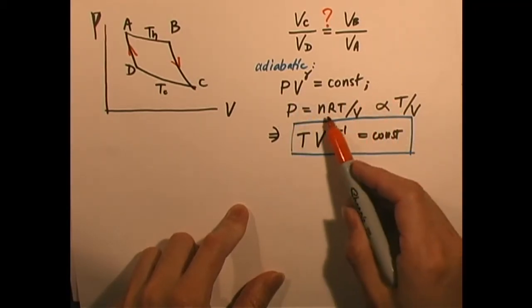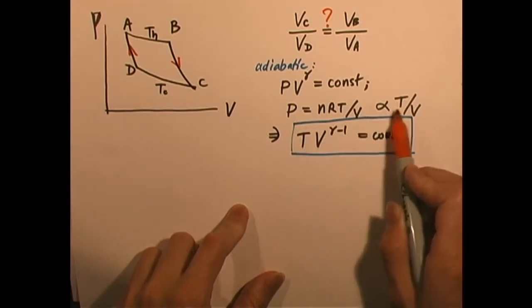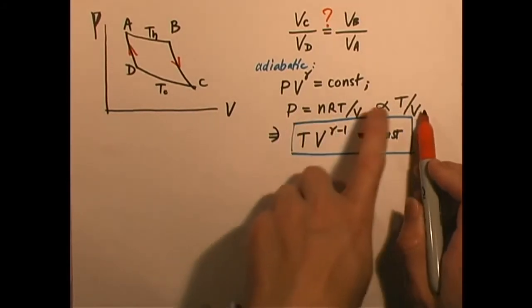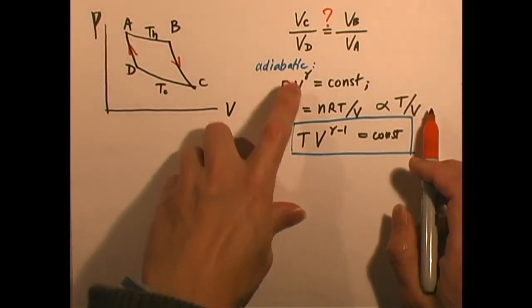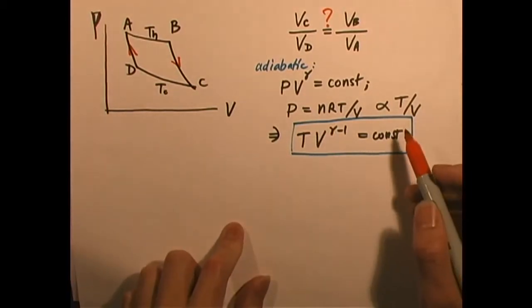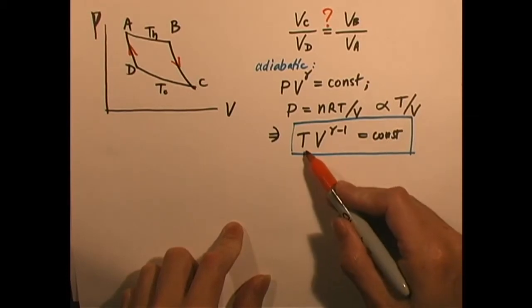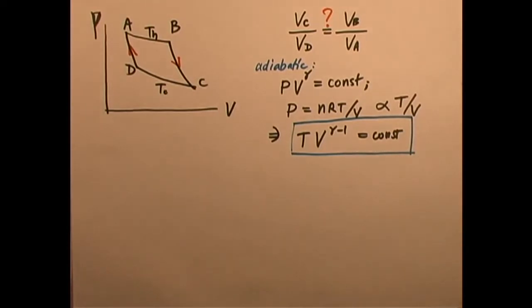Of course we can because we can always use the ideal gas law PV equals nRT. So P equals nRT over V. It's proportional to T over V. So P is some sort of constant times T over V. We plug it in here, we have a T, and then you divide it by V, so V becomes V to the power of gamma minus one. So adiabatic process can equally be written as T times V to the power of gamma minus one equals a constant.